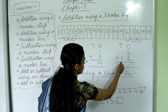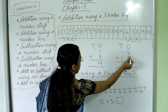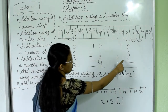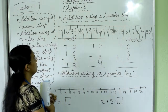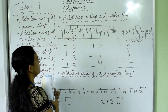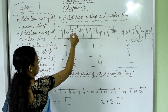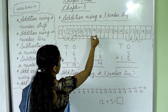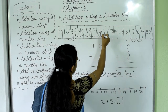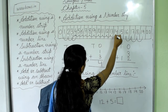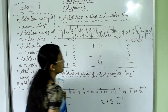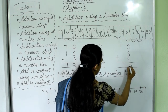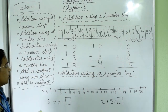Next question is 3 plus 12. Our first number is 3 — it is here. How many steps do we take? 12 steps. You are standing on 3 and take 12 steps: 1, 2, 3, 4, 5, 6, 7, 8, 9, 10, 11, 12. We have reached 15. So 3 plus 12 equals 15. Very easy!